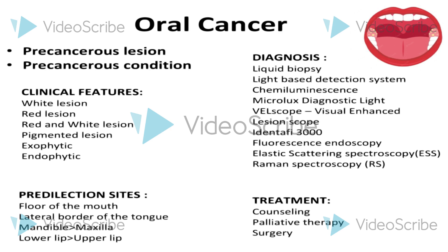Raman spectroscopy and TNM staging can also be used. TNM staging: T refers to tumour, N refers to node, and M refers to metastasis. Depending upon the TNM staging and diagnosis, the treatment plan involves counselling, palliative therapy, and surgery.